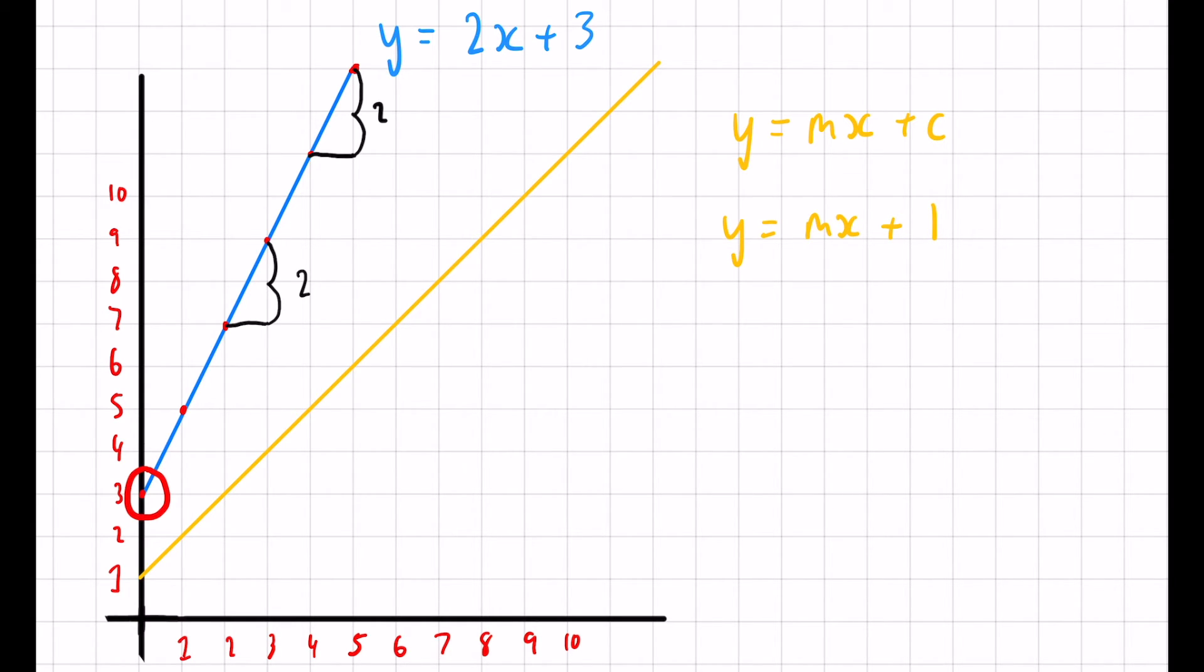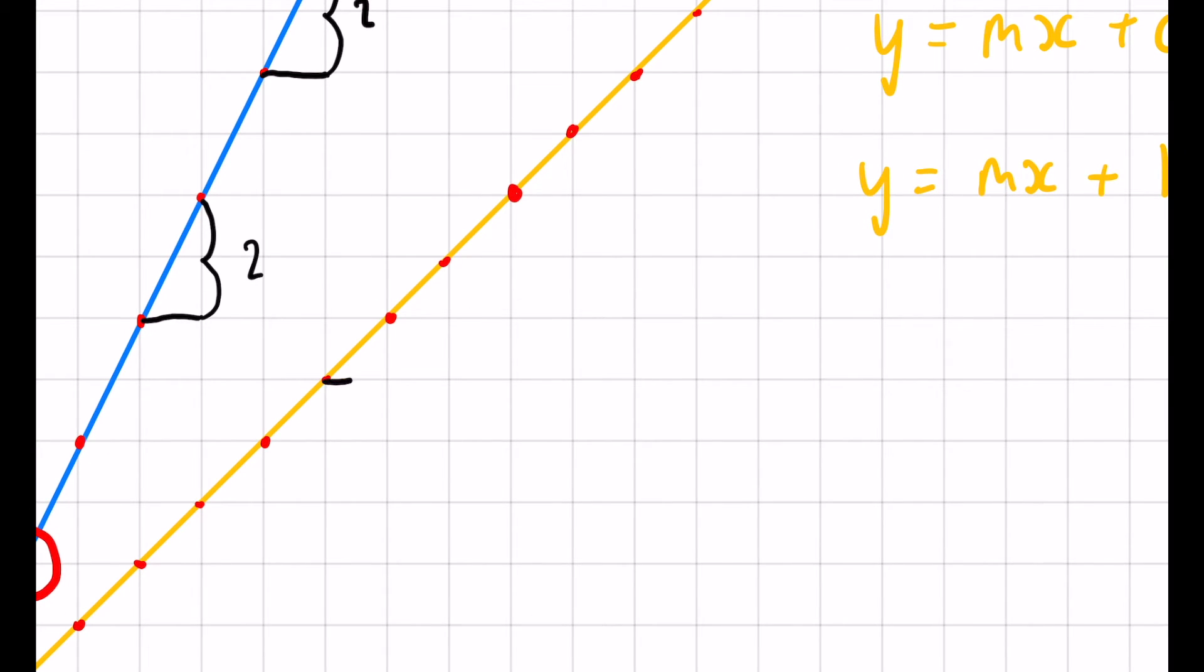Now, gradient. We mark on those points again. This one you can see straight away—those nice points we were talking about happen at every single intersection here. Again, pick one of them, it can be any. We draw one square out. How many squares does it take to get back up to the line? One. And again, you can see that it's the same everywhere.